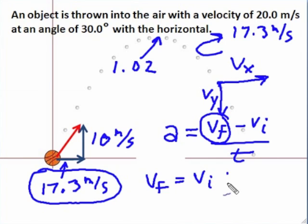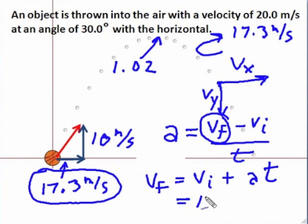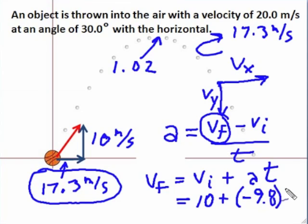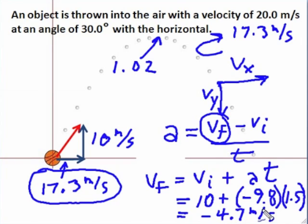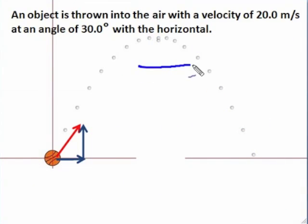So we rearrange it: VI plus AT. VI was 10 — the initial velocity in the upwards direction was 10 meters per second. A is negative 9.8, always negative when we're doing the up and down. And we want to find this final velocity at 1.5 seconds. When we run this through the equation, we find negative 4.7 meters per second. And the negative tells me it's going down, which is exactly what we wanted — VY was down.